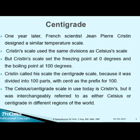What is the centigrade scale? One year later, French scientist Jean Pierre Christian designed a similar temperature scale. The Christian scale used the same divisions as the Celsius scale, setting the freezing point at 0 and the boiling point at 100. Christian called his scale the centigrade scale because it was divided into 100 points, with 'centi' as the prefix for 100. The Celsius and centigrade scale in use today is Christian's.